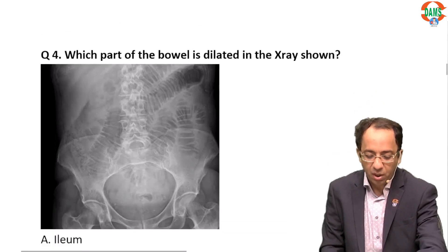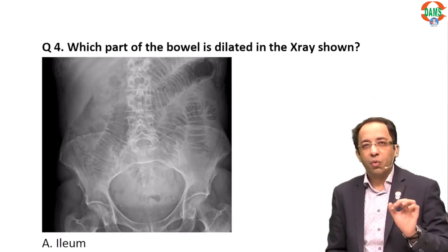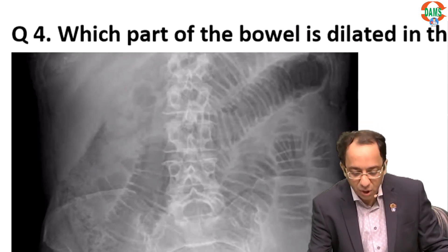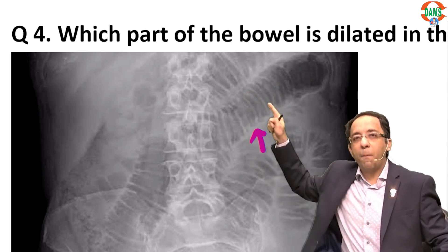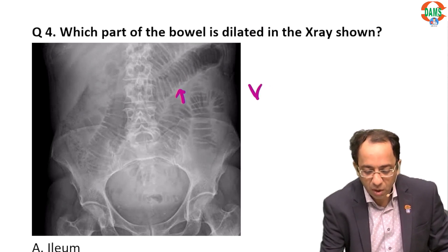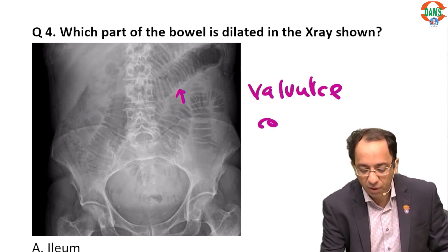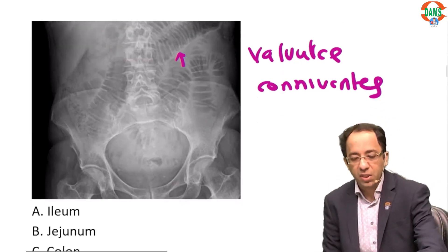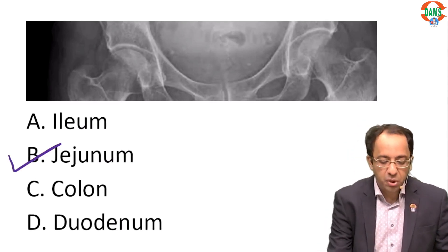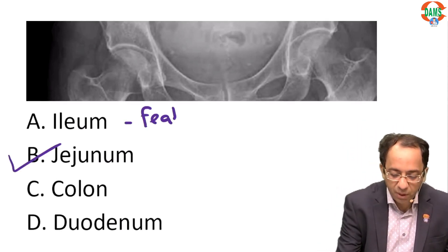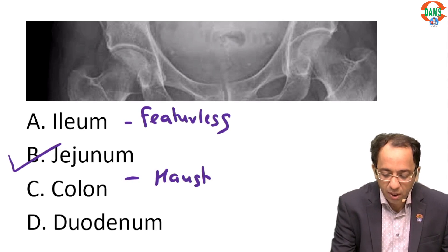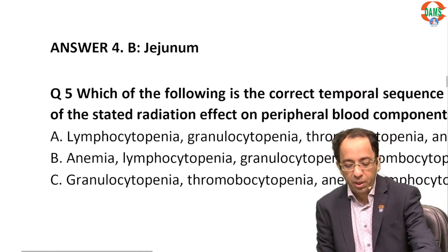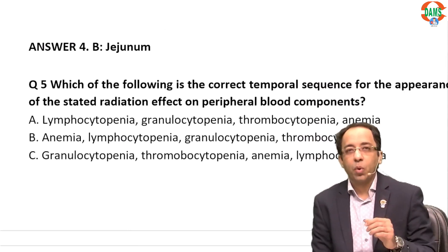Another FMG pattern question: which part of the bowel is dilated? You can see the dilated bowel loop has complete folds — these are called valvulae conniventes. If you see complete folds, it must be small bowel, specifically jejunum. Ileum would be featureless. Colon would show haustrations, which are incomplete folds.